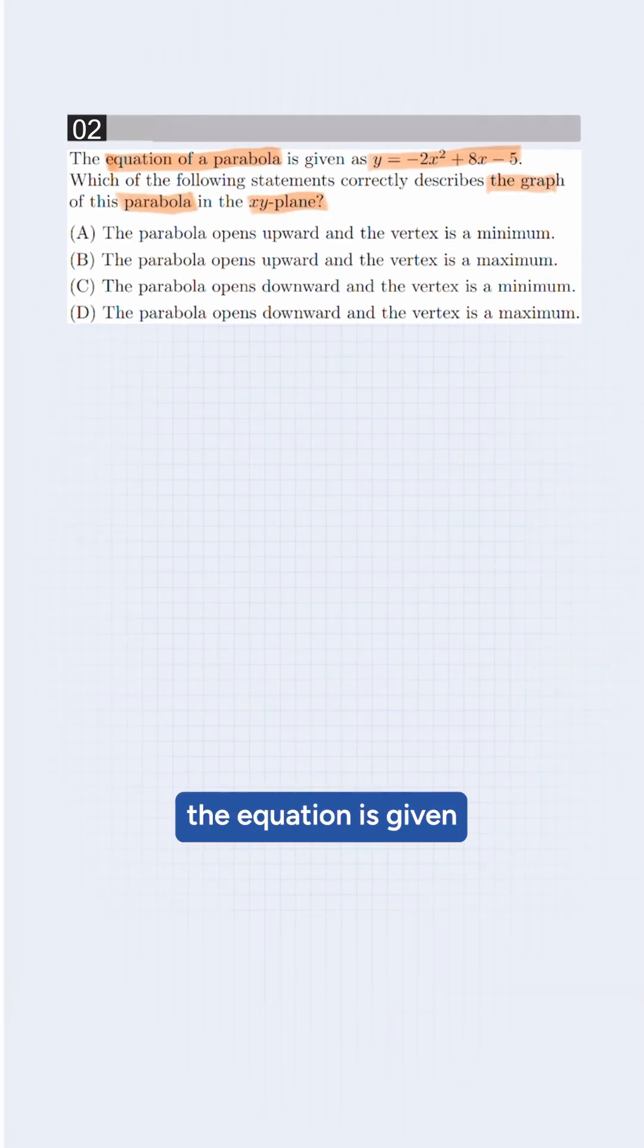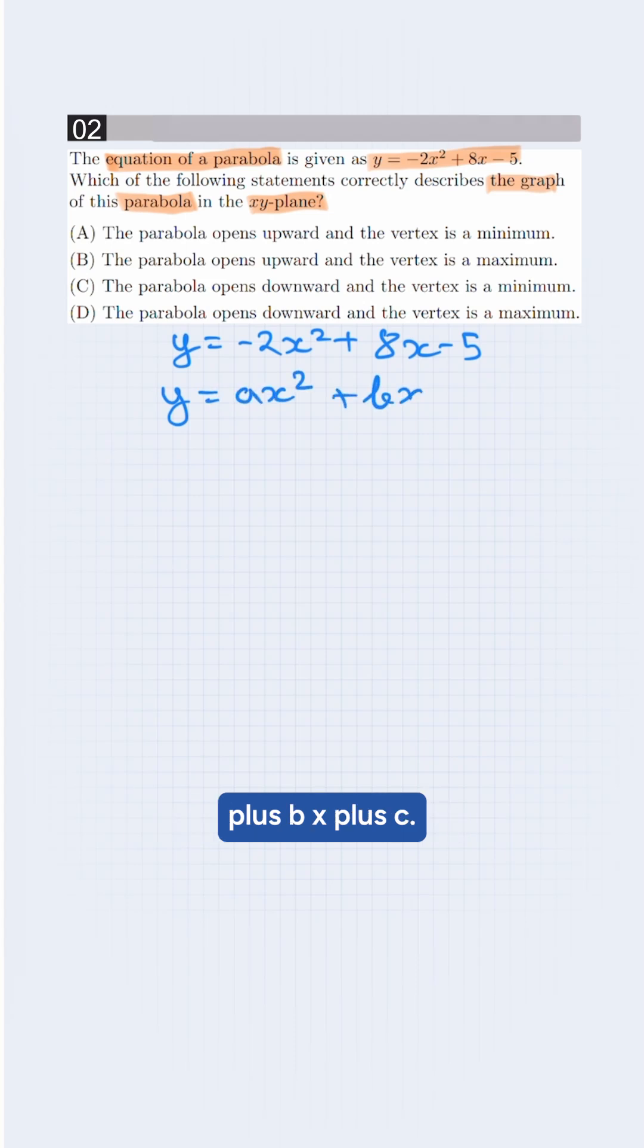First, the equation is given which is y equals minus 2x squared plus 8x minus 5, which is in the standard form of y equals ax squared plus bx plus c.